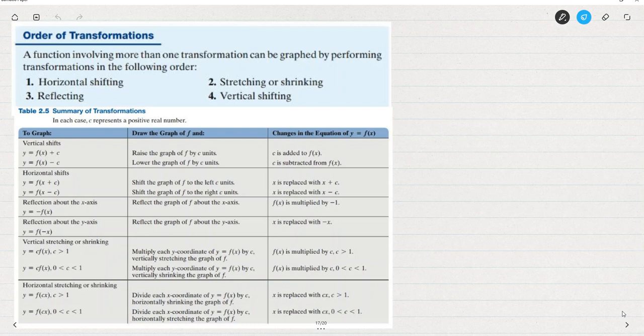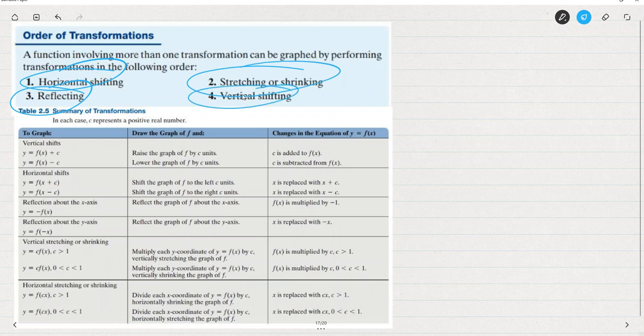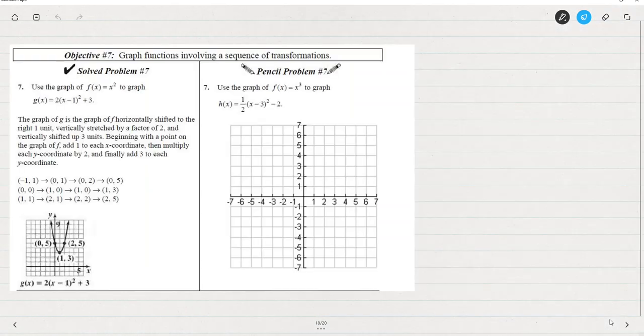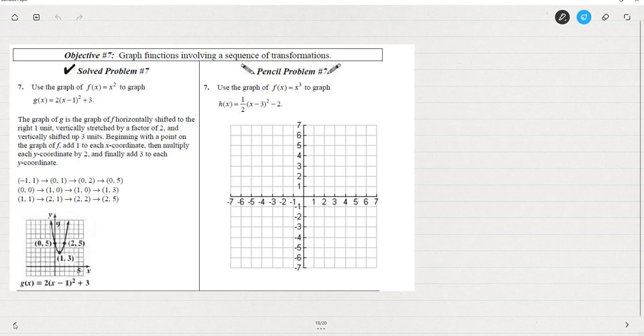Order of transformations. Let's look just real briefly at the order. When you have multiple transformations, we're going to do the horizontal and then reflecting and then stretching and shrinking and then the vertical shifting. So when we look at this example, make sure you're following that pattern. We'll do some examples of this together as well in class but I don't want this video to go too long so I'm going to go ahead and stop the video and come back to this last example in a third video.